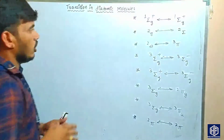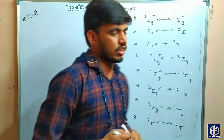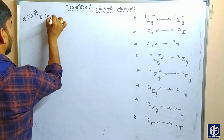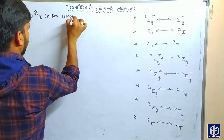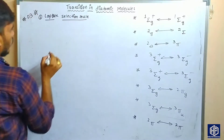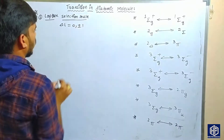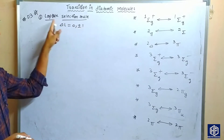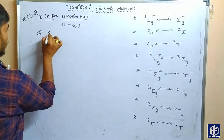This is one more important concept. Four important rules are given. The first one is the Laporte selection rule. The Laporte selection rule states that the delta L value is zero and plus or minus one. If the delta L value is zero or plus or minus one, it satisfies the Laporte selection rule.